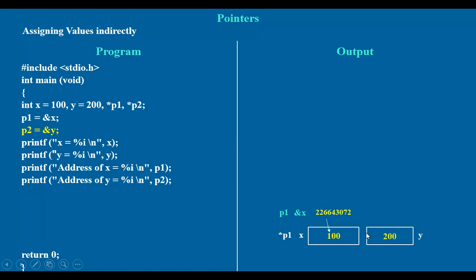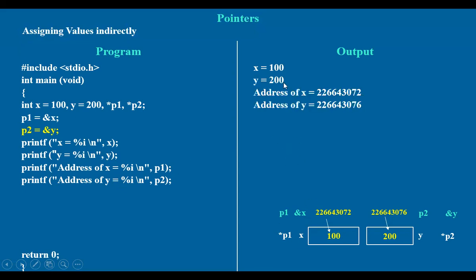Coming to y — variable y is assigned 200. Its address is ampersand y, or p2; both refer to this same address. Star p2 is the value at that address. So we have taken two variables, their addresses, and pointers — everything is clear. When you compile and run this program, you get x, y, p1, p2 displayed: x value, y value, x address, y address — for example 72 and 76.